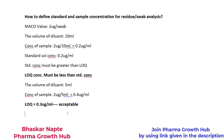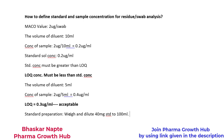Now I can define the standard and sample preparation. So how to define the standard preparation? My requirement for the standard concentration is 0.4 microgram per mL. So I will say: weigh and dilute 40 mg of standard to 100 mL. What is the concentration of this stock? 40 mg diluted to 100 mL is going to give me 400 microgram per mL. But my requirement is 0.4 microgram per mL. So further dilute 1 mL of the resultant solution to 200 mL.